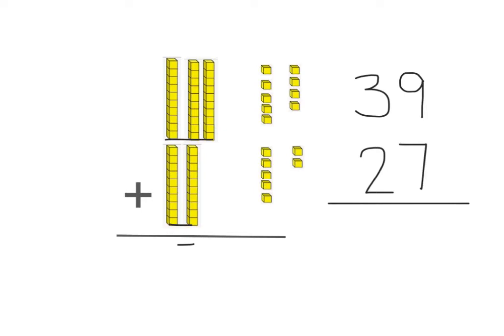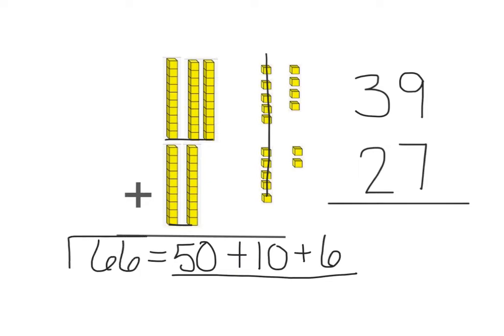30 plus 20 equals 50. Oh, 5 and 5 is a 10. Love to see that 10. 4 plus 2 equals 6. So 50 plus 10 equals 60 plus 6 equals 66.